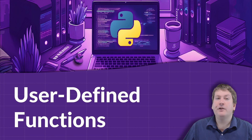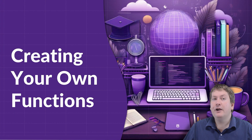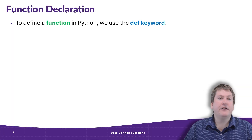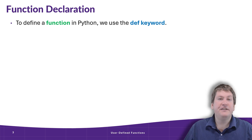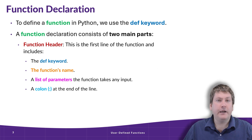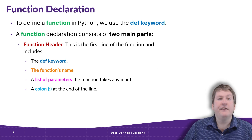In this video, we're going to talk about user-defined functions in Python, and more importantly, how you can create your own functions in your Python programs. The way we declare a function is to use the define keyword, which is def. When we want to make a function, we need to declare two things: a function header, as well as the function's body. The function header is the first line of the function, and it sets up a few things we need to know to both code the function, as well as later call on it.